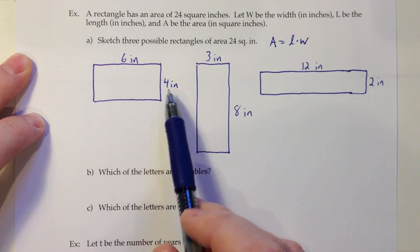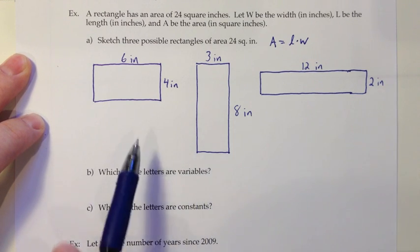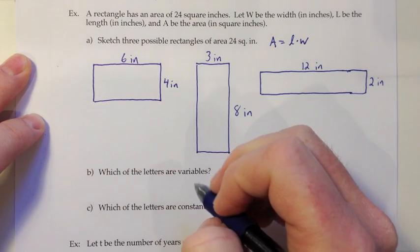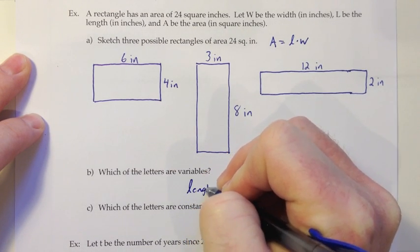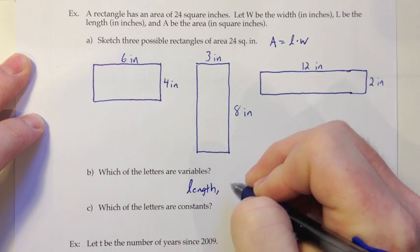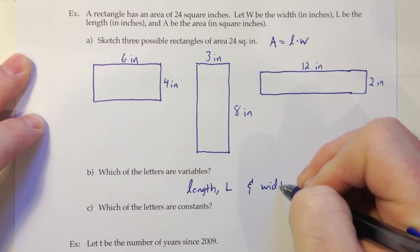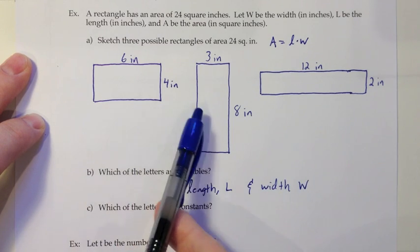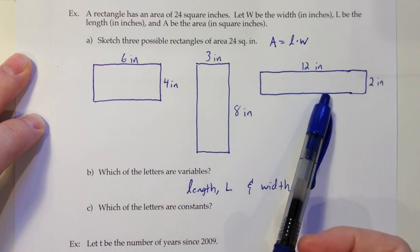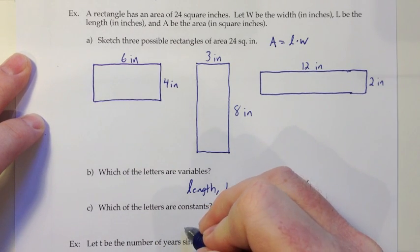Alright, so what they want us to understand from that is the idea that if you were given an area of 24 square inches, then that is constant through this problem, so all these pictures have that same value. But you can vary the length and the widths and still achieve that constant. So which of the 3 letters are variables? Well, we see different values here for our lengths and widths, so I would say the length and width are variables. So the length L and the width W, those are both variables. And which of the letters are constants? Well, in all three of our pictures, we had 24 square inches, and that was insisted upon in the wording, so I would say that the area A is a constant.